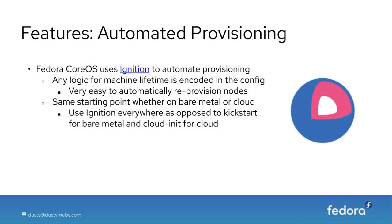Because Ignition is not very human-friendly, we have a tool called the Fedora CoreOS Config Transpiler, which is much more human-friendly. It's written in YAML and has some 'sugar on top' that will automatically write out some of the more tedious parts of Ignition for you.